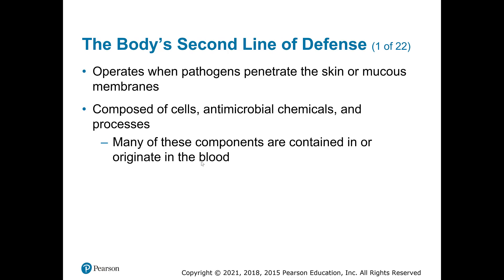Your second line of defense — these things are going to be important if a pathogen gets past those first lines of defense. Let's say you have a cut in your skin and some bacteria gets past. There are still defenses in place to prevent establishment of that microbe in your blood. We're really talking about things in your blood that are going to help isolate and get rid of them before they cause a problem — different cells, chemicals, and processes.